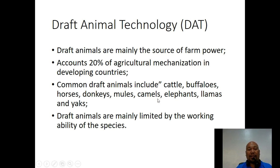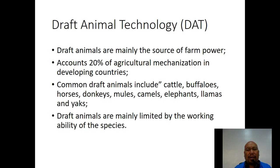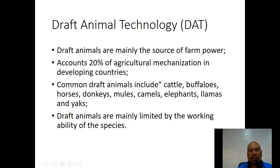When we say 20 percent of agricultural mechanization, this is based on the amount of power — not the number of animals nor the number of engines or people — but the amount of power being put into a certain farm. The common draft animals include cattle, buffalo, carabao, horses, donkeys, mules, camels, elephants used in Thailand and parts of South Asia including India, llamas, and yaks.